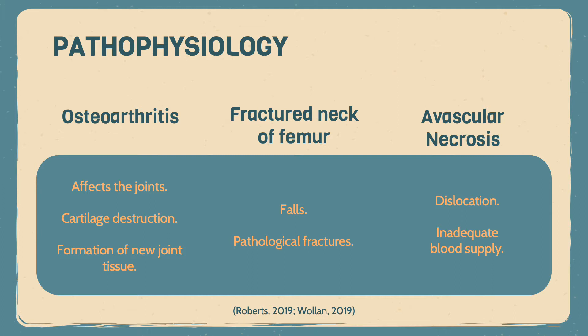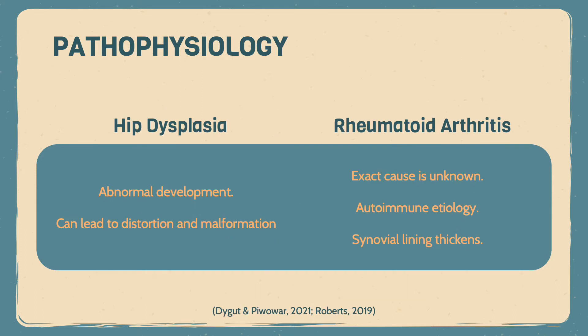Ninety-five percent of hip fractures result from falls. Most fractures are caused by mechanical forces such as falls; however, pathological fractures do occur and are secondary to a disease process. Avascular necrosis is caused by dislocation of the joint as a result of trauma, which results in poor blood supply that causes bone cell death.